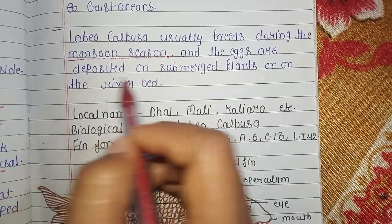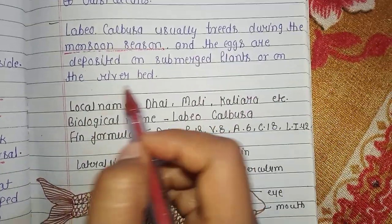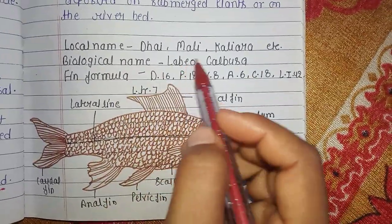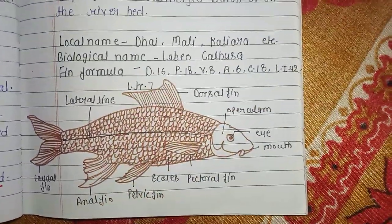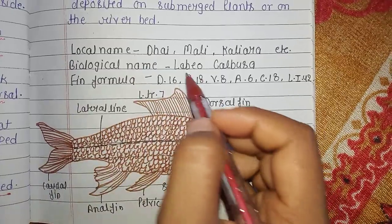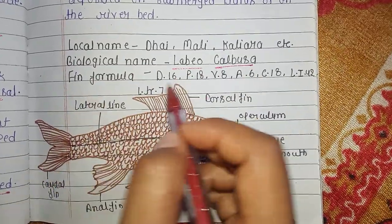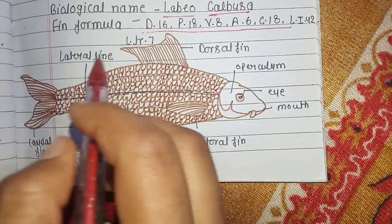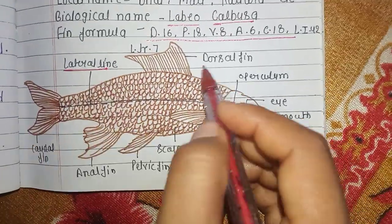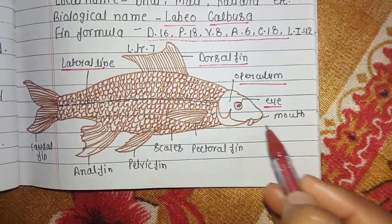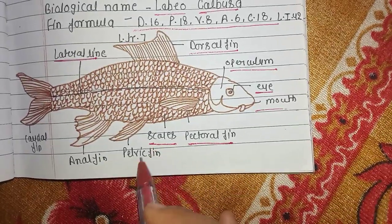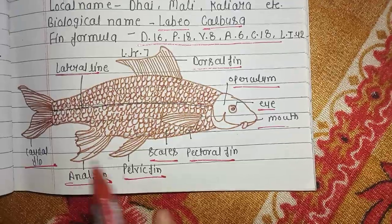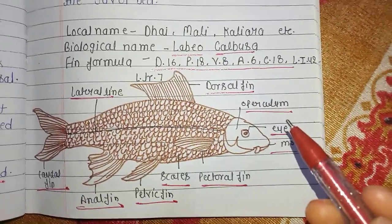Labio calbasu usually breeds during the monsoon season and eggs are deposited on aquatic plants on the riverbed. The local names of calbasu are Daimali, Kalyar, etc., and the biological name is Labio calbasu. Here is the fin formula and labeled diagram of calbasu, showing: lateral line, dorsal fin, operculum, eye, mouth, pectoral fin, scales, pelvic fin, anal fin, and caudal fin. I hope this video is very helpful for your exams. Thank you so much.